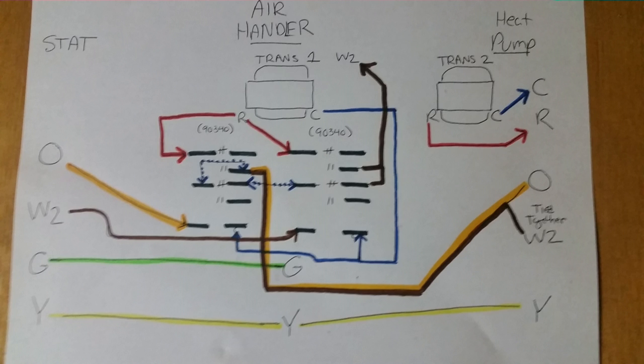But the real thing happens whenever defrost occurs. That's what makes it so difficult to plan out. So we see our O and W2 tied together. So when defrost occurs, W2 and O are both energized. Now the O is energized from the outdoor unit and travels to the reversing valve, which is also in the outdoor unit. So we don't really have to worry about that one.